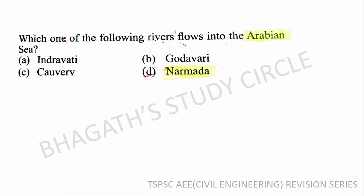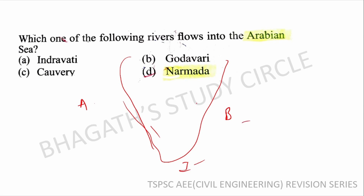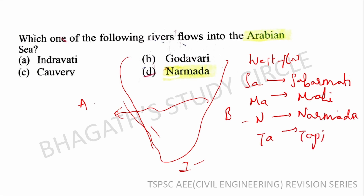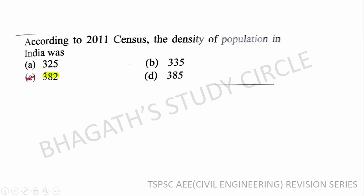Next question: Which one of the following rivers flows into the Arabian Sea? The west-flowing rivers include Sabarmati, Mahi, Mahe, Sone, and Narmada. These are the rivers that flow westward into the Arabian Sea. Option C is the correct answer.